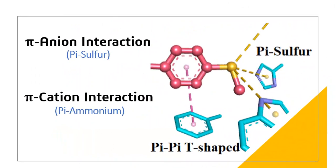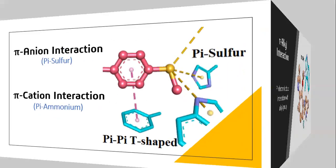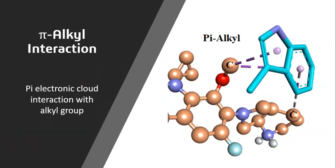Pi-anion interaction: for example, an aromatic ring interacts with a sulfur ion — known as pi-sulfur interaction. Another type is pi-cation interaction, where the pi system interacts with a cation such as an ammonium ion. Pi-alkyl interaction: the pi electronic clouds of a conjugated system or benzene ring interact with electrons of an alkyl group.